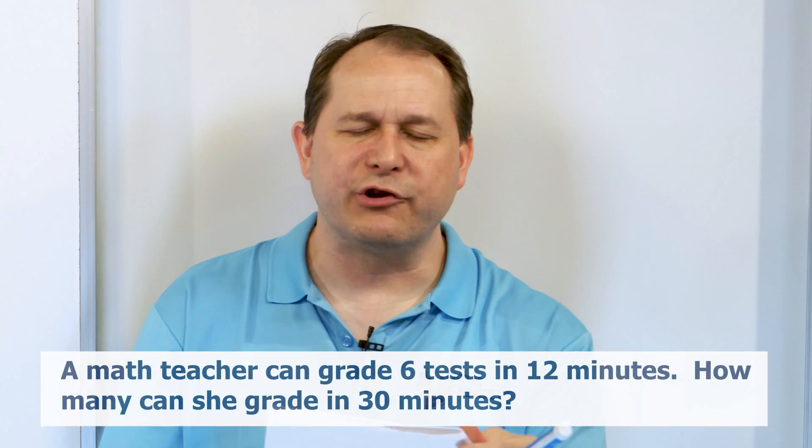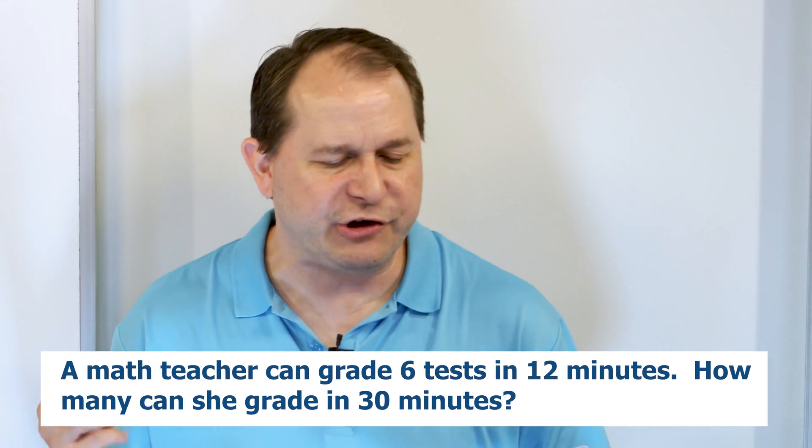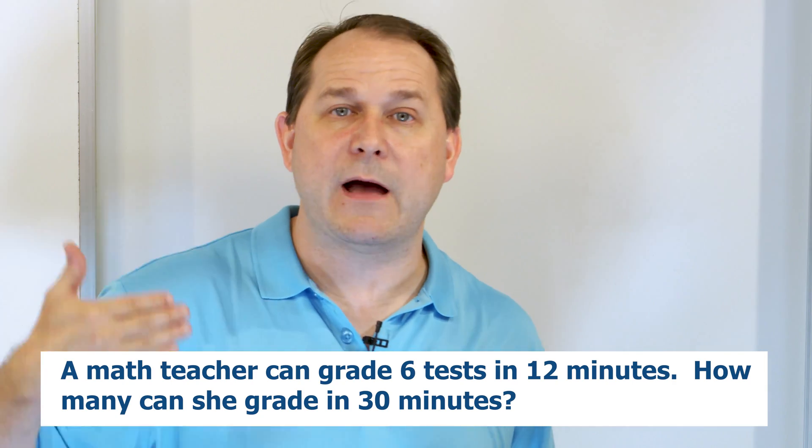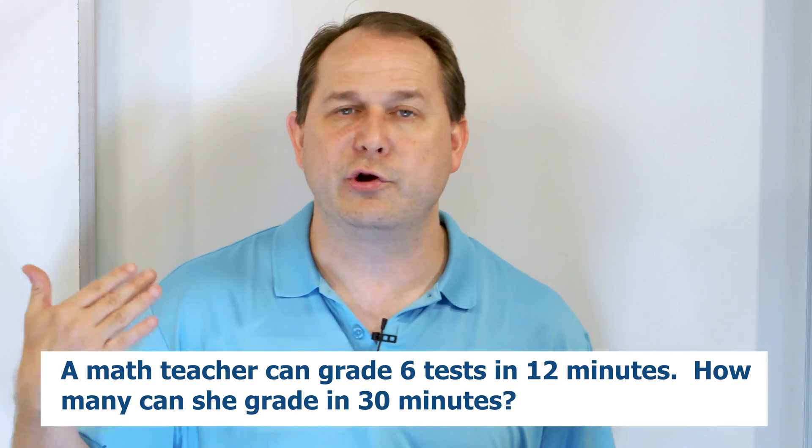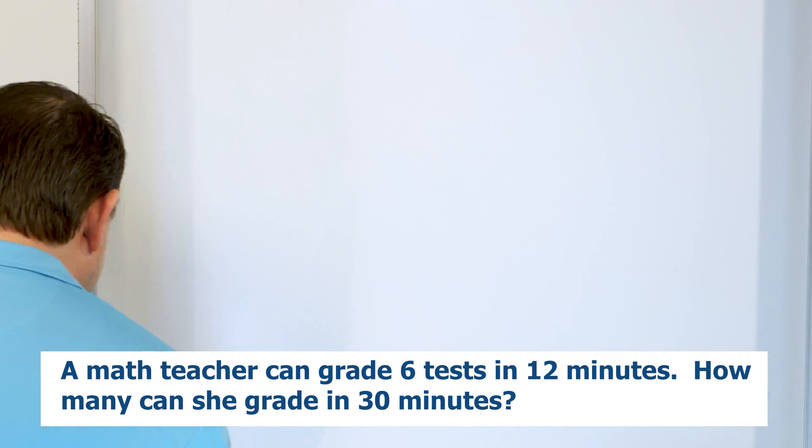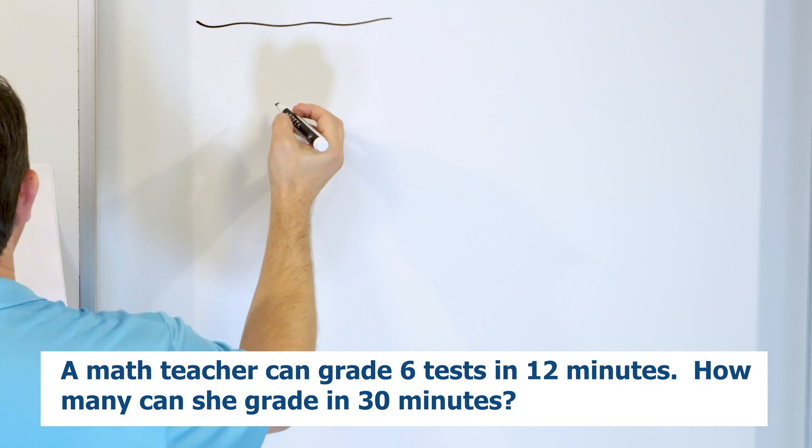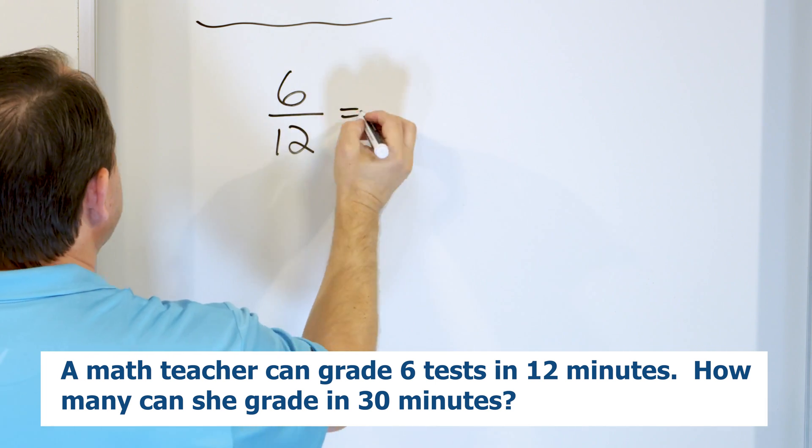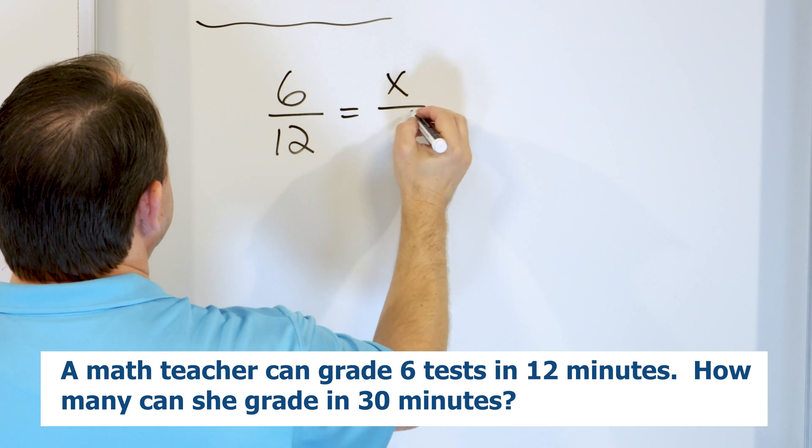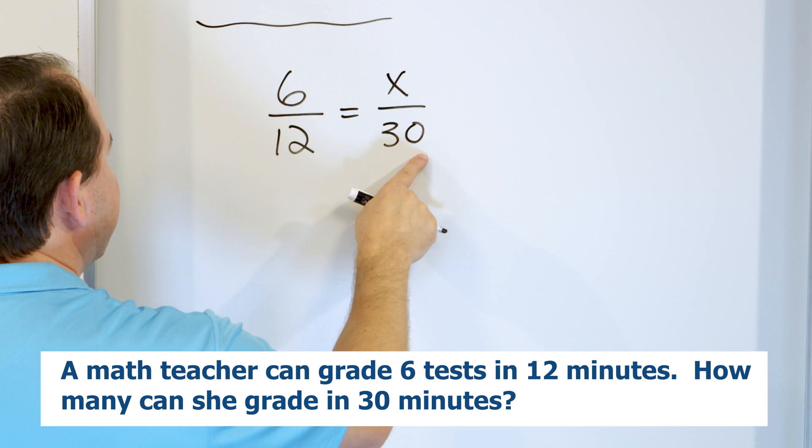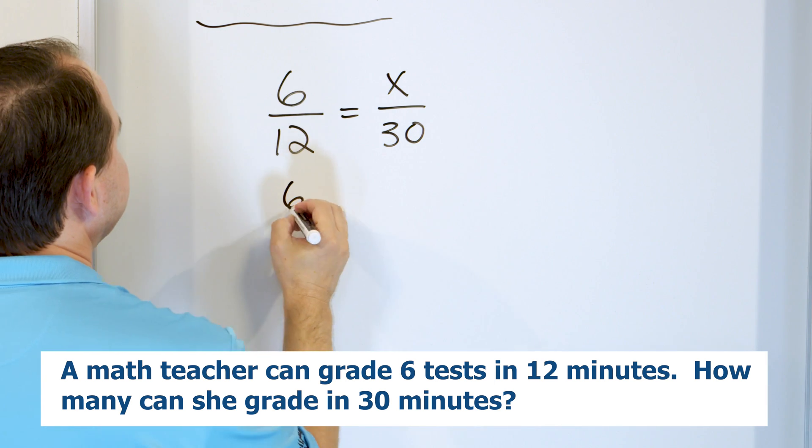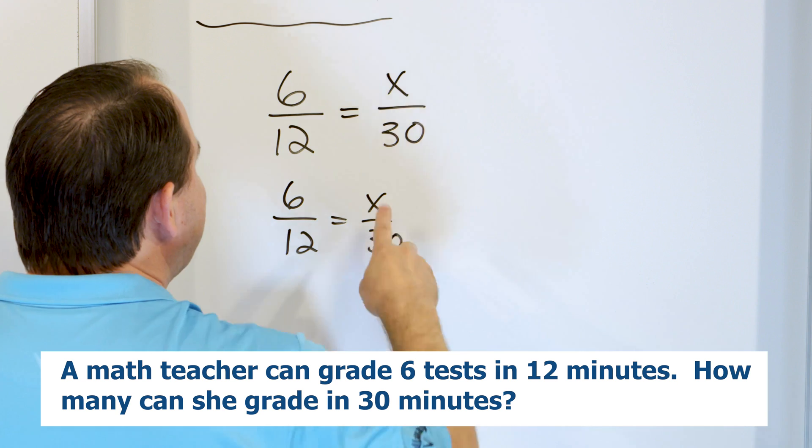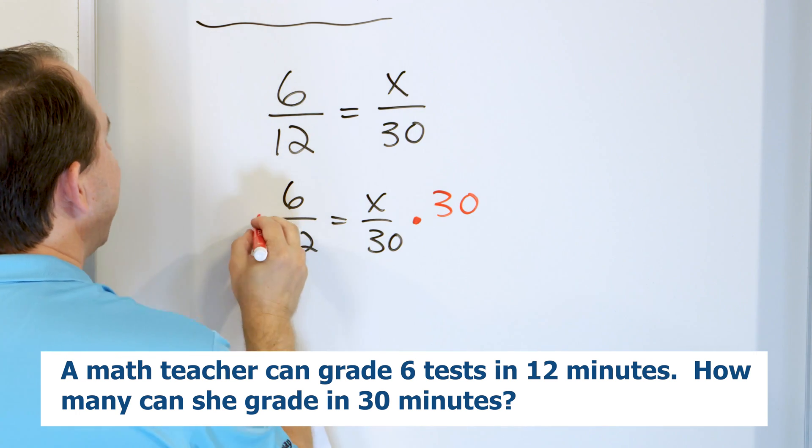All right. Last problem. It says a math teacher can grade six tests in 12 minutes. How many can she grade in 30 minutes? So this is a straight proportion problem. We're assuming the teacher can grade the same amount and consistently grade six tests in 12 minutes over and over and over again. Nothing changes with her speed. So if we write down what the proportion would be, we're basically saying that the number six as it relates to 12, meaning six tests in 12 minutes, this rate of grading is the same ratio as how many can she grade in 30 minutes. Notice I have tests and tests and minutes and minutes. I'm going to solve this proportion. So let's write x over 30. So let's write it like this. And how do we get x by itself? We're dividing by 30. So we then must multiply by 30. And we have to do it to both sides.